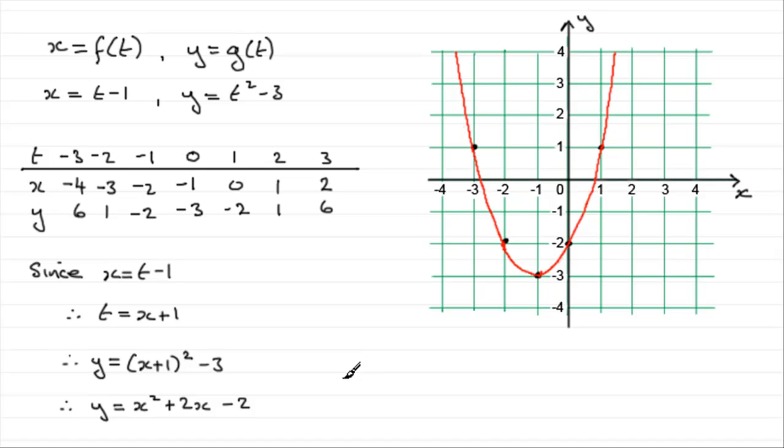Now, in later tutorials, what I'm going to show you is how we can sketch fairly simple parametric curves without having to resort to a table. We'll also be looking at how we can change parametric equations into Cartesian equations, finding tangents and normals to a parametric curve, and also stationary points, like in this example, at the bottom here. So, I hope you'll have a look at those tutorials. But for now, that brings us to the end of this particular one.